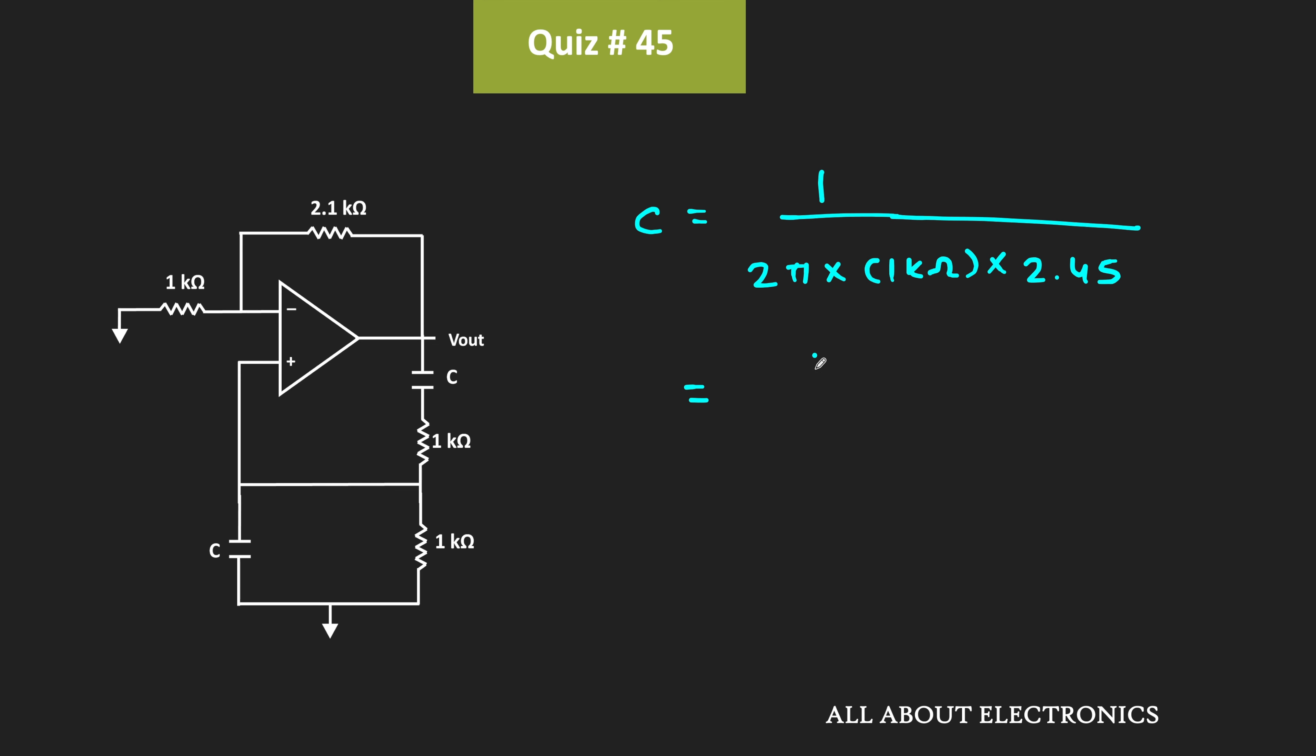That is equal to 1 divided by 2π times 2.45 times 10^6. Or we can say that C is equal to 1 divided by 2π times 2.45 μF.